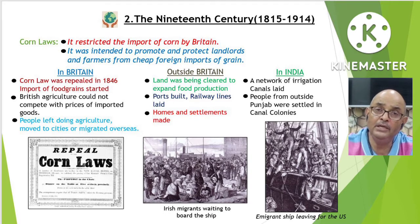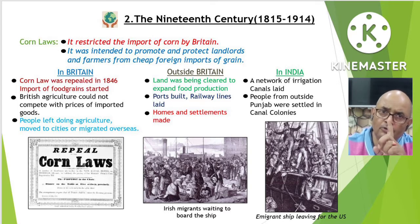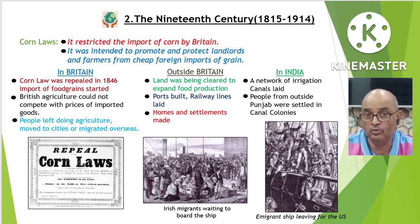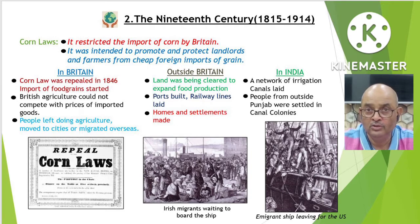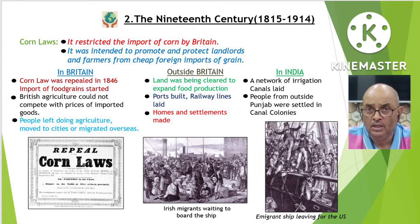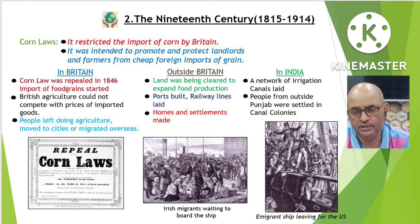The demand for labor in America and Australia was met by migration of people. About 50 million people emigrated from Europe to America and Australia in the 19th century, and all over the world some 150 million are estimated to have left their homes, crossing oceans in search of a better future. You can see pictures of migrating people on the slide — an emigrant ship leaving for the U.S., and Irish emigrants waiting to board the ship, pictured in 1874.